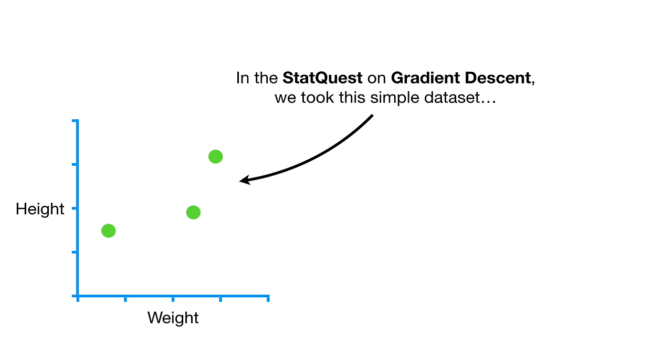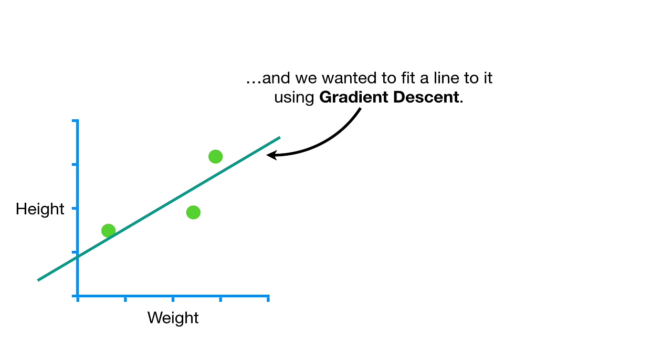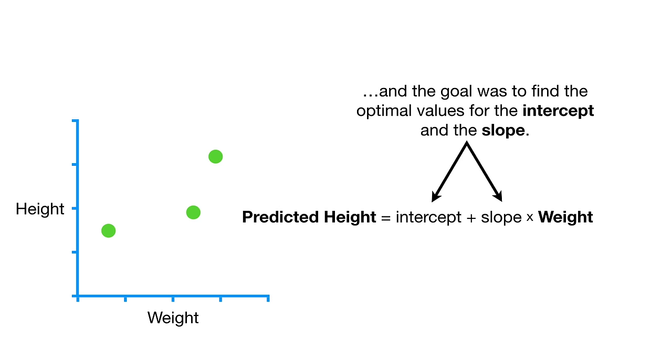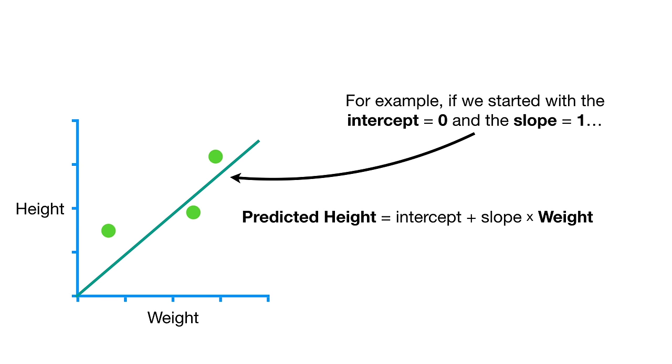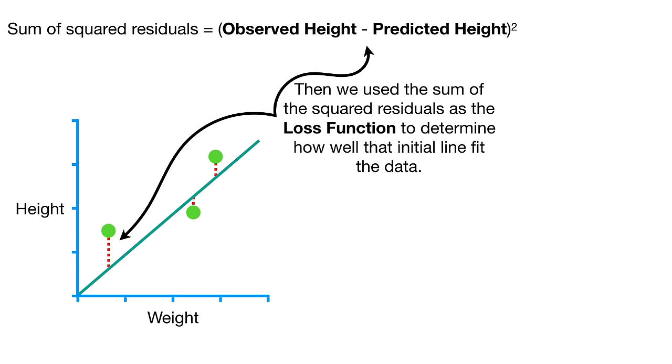Now, even though I just said you need to watch the StatQuest on gradient descent, let's do a little review to demonstrate the problem that stochastic gradient descent solves. In the StatQuest on gradient descent, we took this simple data set, height and weight measurements from three different people, and we wanted to fit a line to it using gradient descent.